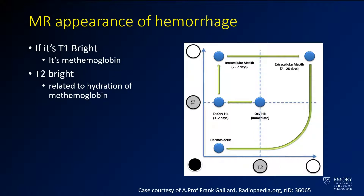When it's T2 bright, that tends to be related to hydration of that hemoglobin — a lot of water around hemoglobin. You can see a graph from Radiopaedia here, a very common illustration showing the evolution of hemorrhage on MR over time. When you start out in the immediate phase, it's iso-intense on both T1 and T2. As time passes, the oxyhemoglobin becomes deoxyhemoglobin, which is somewhat darker on T2, giving a dark appearance. That usually happens in the first day or so, but you're still iso-intense on T1.